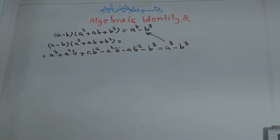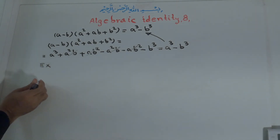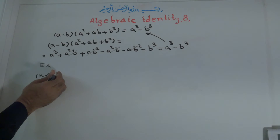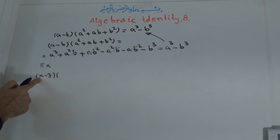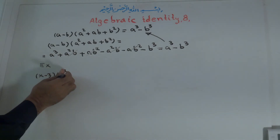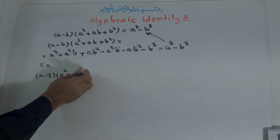Now to apply this identity and solve an example for you: it will be X minus 3, times X² plus X times 3, which is 3X, plus 9.